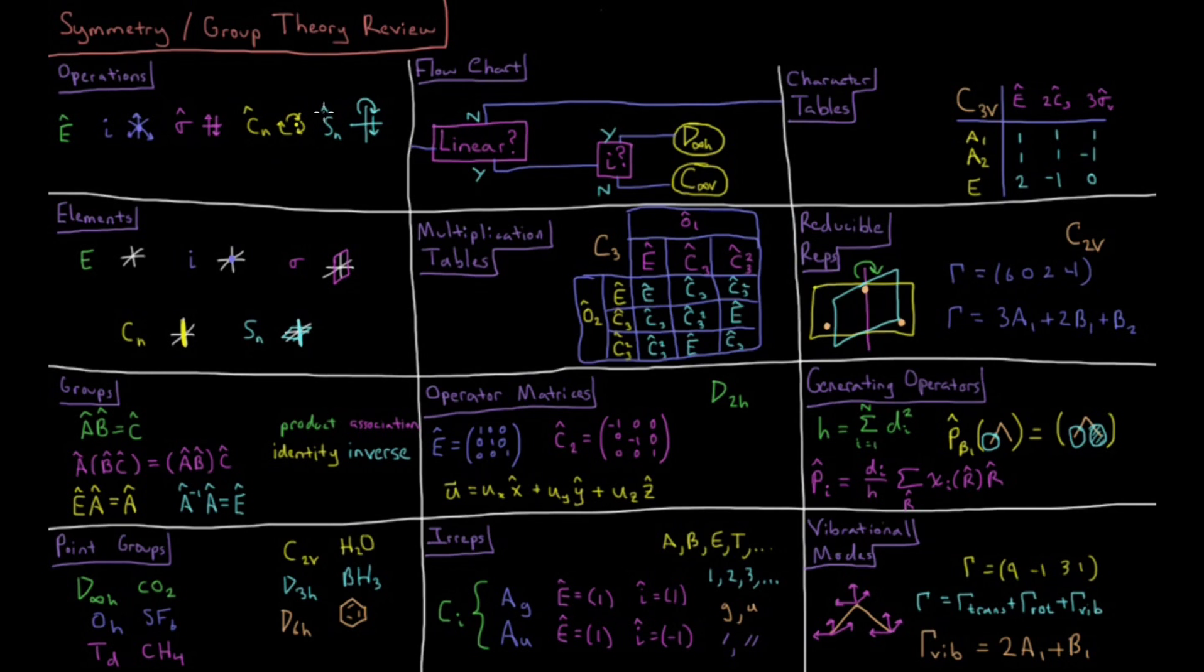And sn, an improper rotation axis, where we first rotate by 360 over n degrees, then we reflect through a plane which is perpendicular to that axis of rotation.